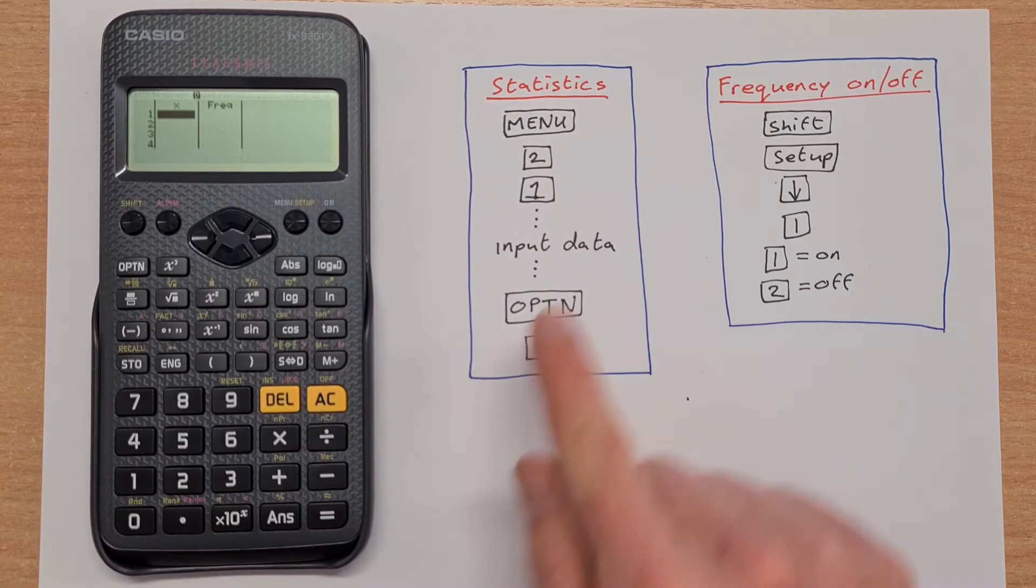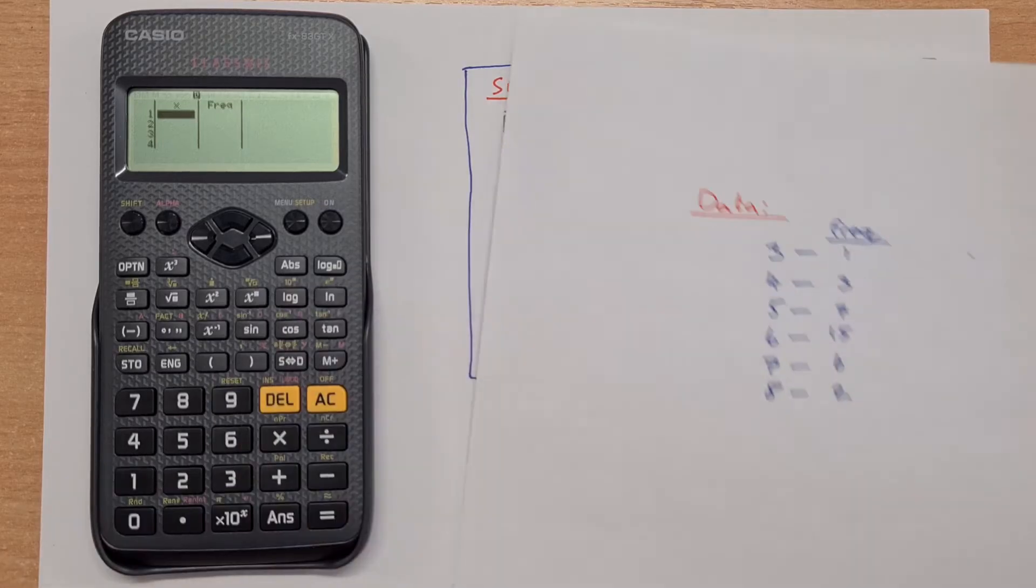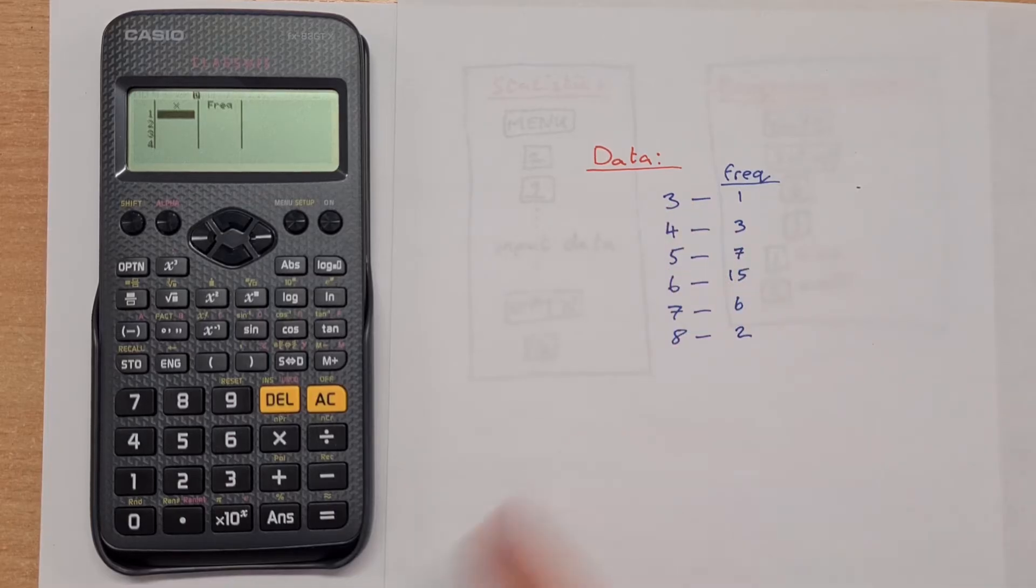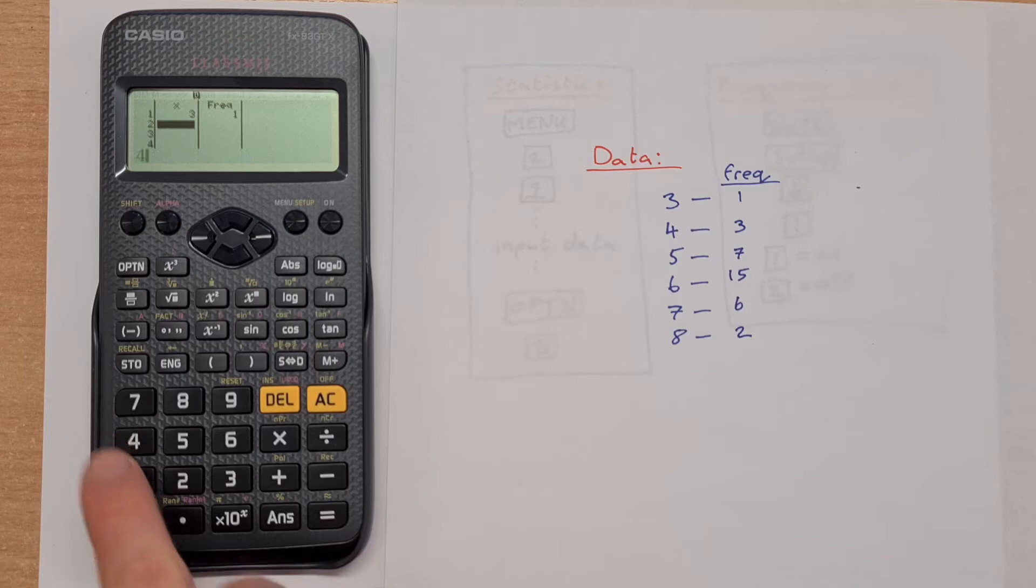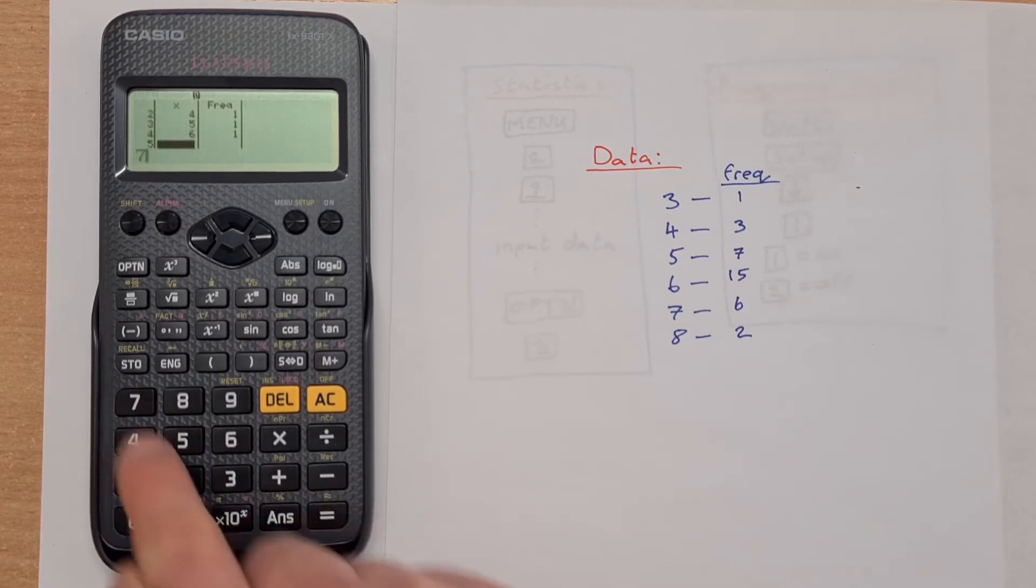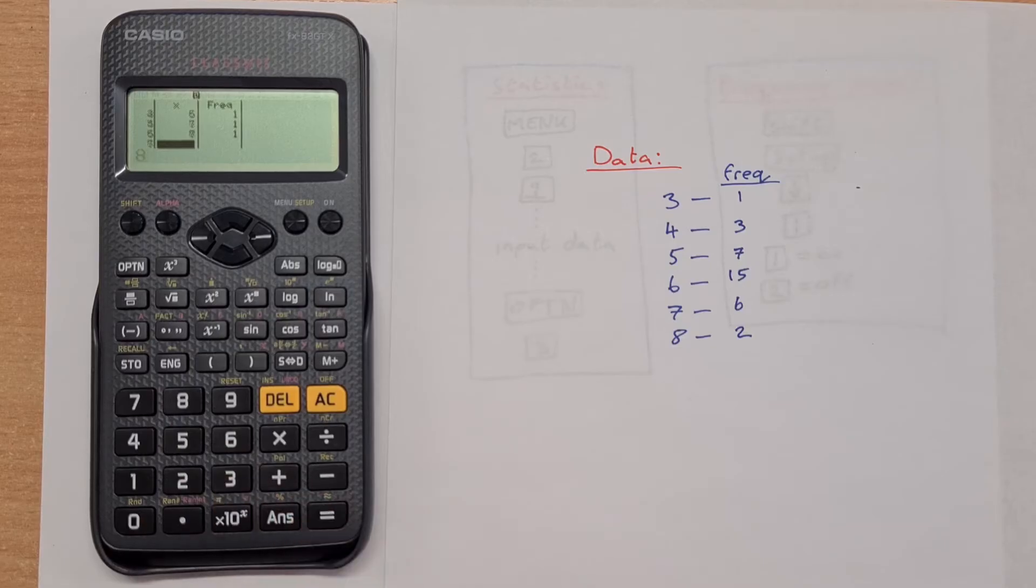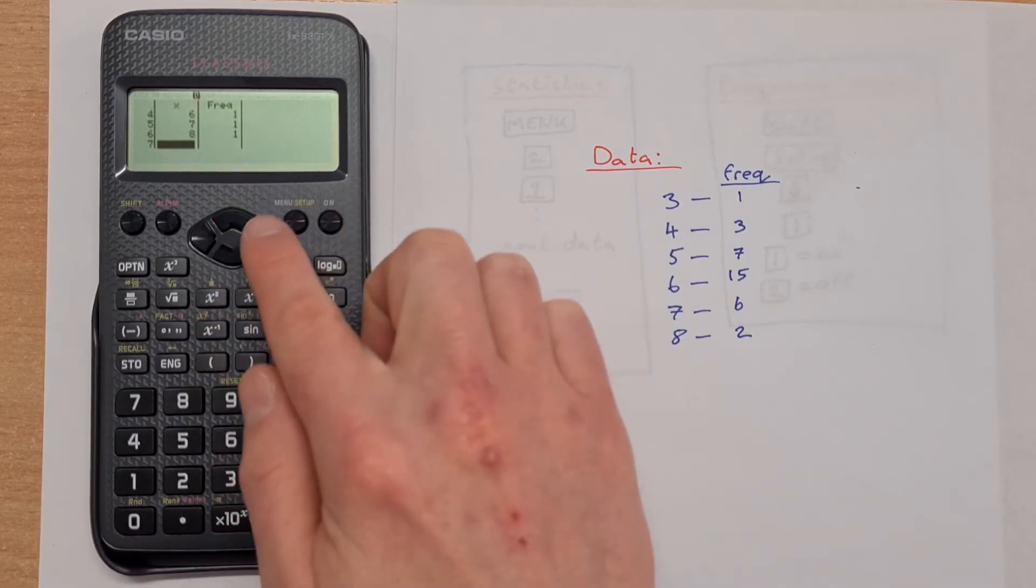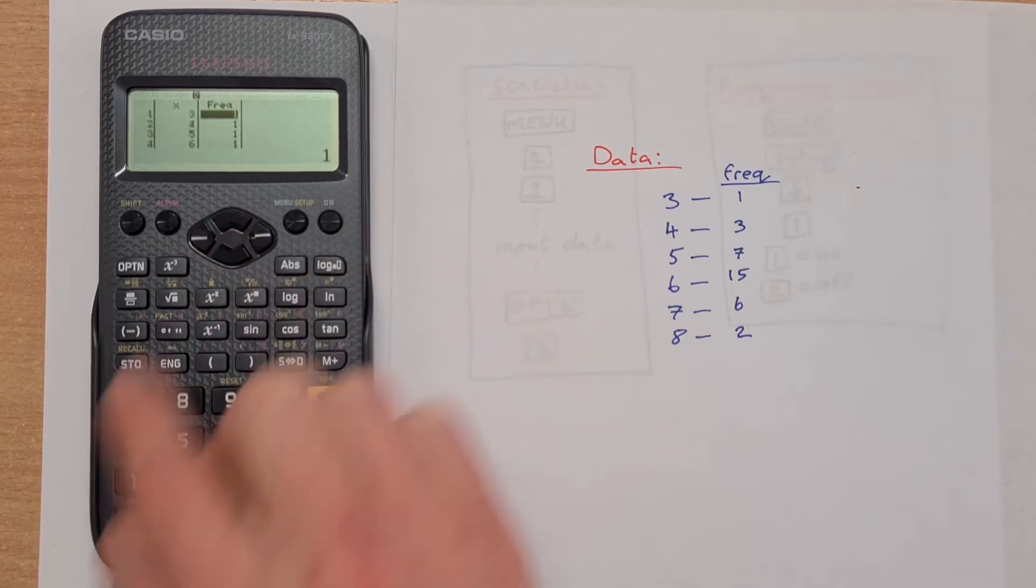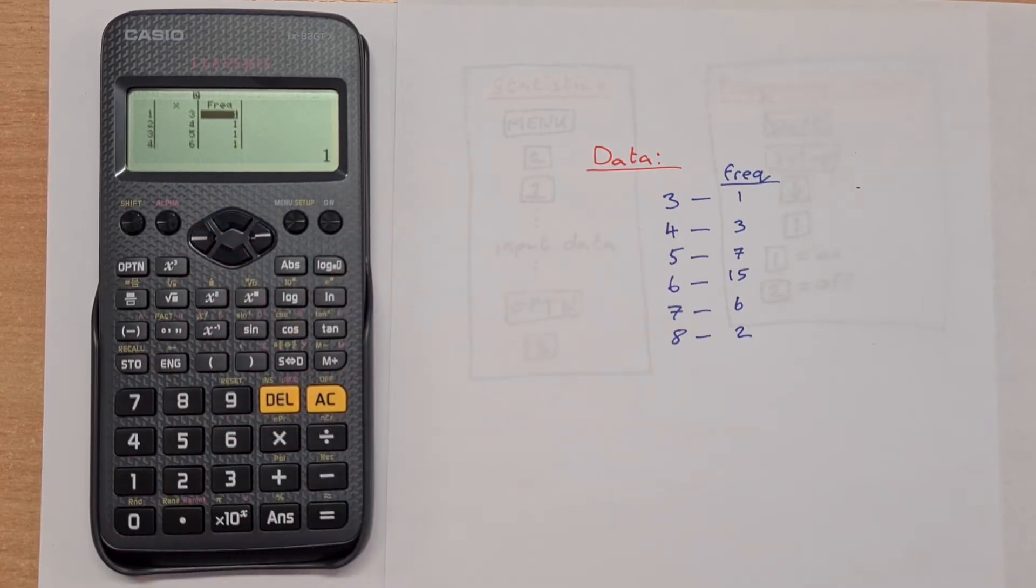So next thing is you input some data. I have some data here that I'm going to input. I'll start by just inputting the data here on the left. So I have 3, press equals, 4, press equals, 5 equals, 6 equals, 7 equals, and 8 equals. What you notice is the frequency automatically comes up as 1. We can scroll using our direction arrows here and then we can input the frequency.